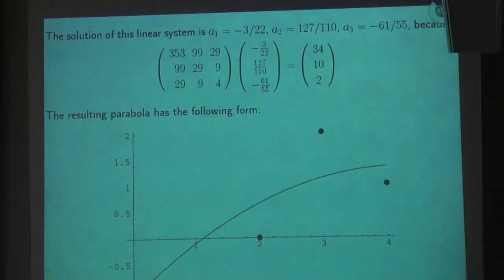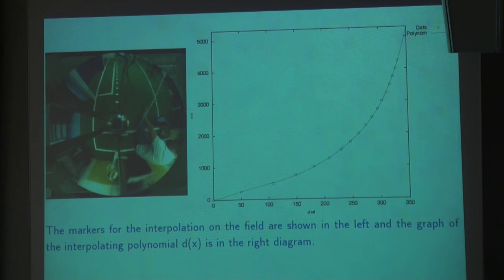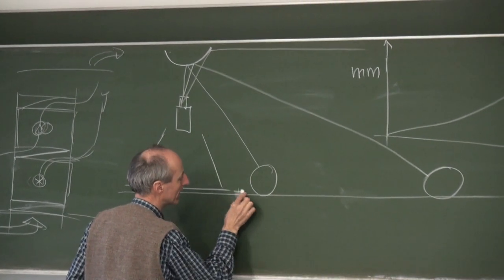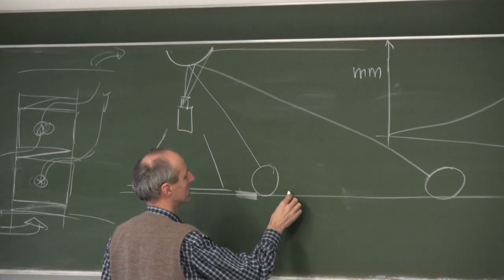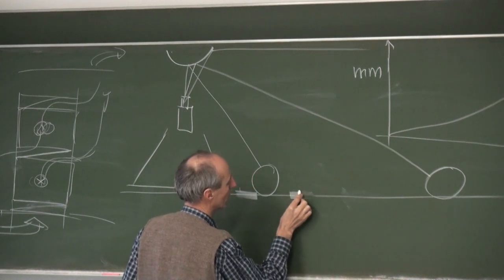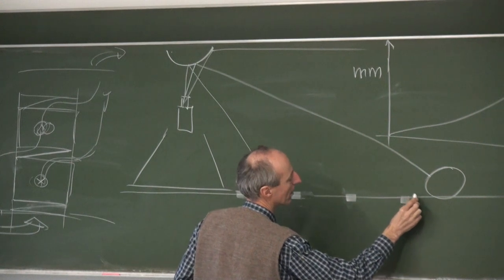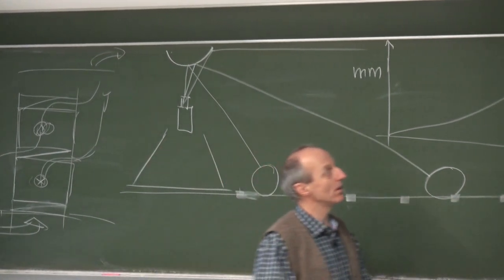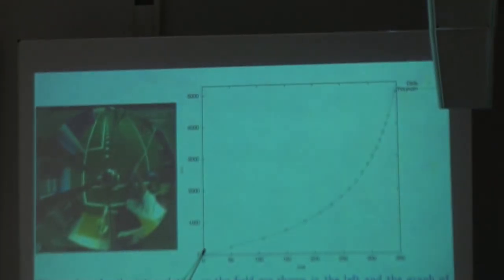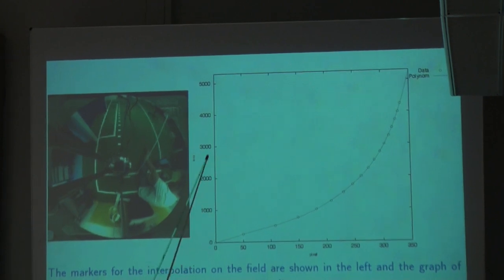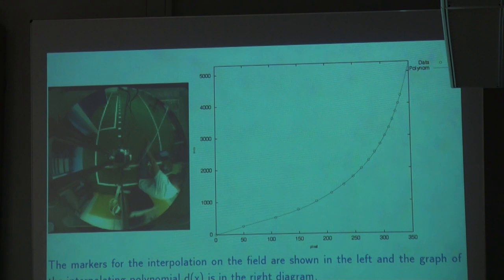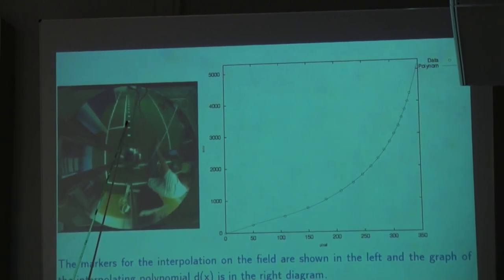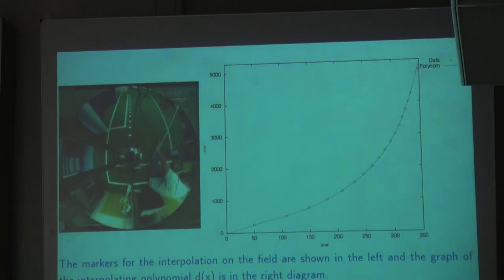Where do we get these points from? We did the following: on the ground, we put some white marks, one here, then every 20 centimeters there was a little white mark. So we know here is a mark, then 20 centimeters further there is another mark and so on. We put these marks, so we have the Y values of our points. Then we looked at our pixel image: the first mark is here, the second is here, and so on. That's how we got these points. And what's missing is just a function through these points.